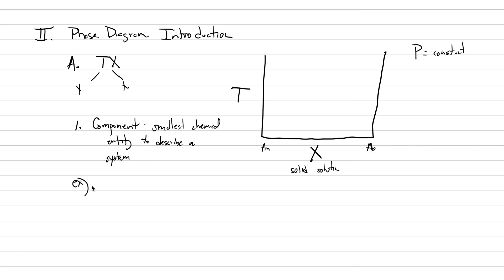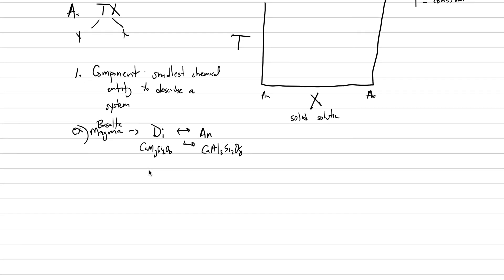Alright, the system could be an example. The system could be a magma. In fact, let's make it be a basaltic magma. And that has all sorts of oxides in it: MgO, FeO, SiO2, Al2O3. But the simplest way to describe a basaltic magma has been found to be diopside is one component. And that goes in solid solution to anorthite. And I guess we could write, what are those actual components? Well, that's CaMgSi2O6 in solid solution with CaAl2Si2O8.